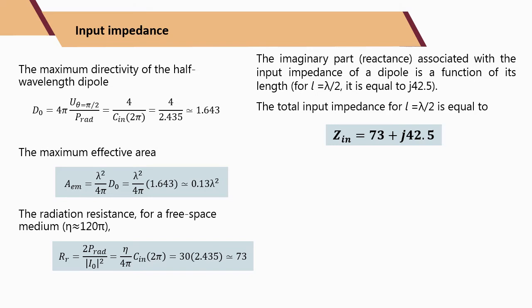The maximum directivity of the half-wavelength dipole antenna: using the general equation D equals 4pi U divided by P_rad, where P_rad equals C times pi equals 2.435, the maximum directivity is 1.643. The maximum effective area A_em equals lambda squared times 0.13.